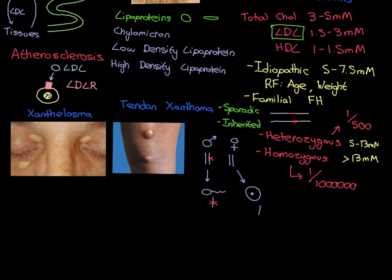Let's give another example. Let's say both mum and dad have heterozygous familial hypercholesterolemia. Half of dad's sperm cells are going to have a faulty LDL receptor gene, and half of mum's egg cells are going to have a faulty LDL receptor gene. What is the chance of having a homozygous familial hypercholesterolemia child? You'd need a faulty sperm cell and a faulty egg cell. The probability of a sperm cell having the mutated gene is 50%, and the probability of the egg cell having the mutated gene is also 50%, so the probability of getting both is a half times a half, which is a quarter.